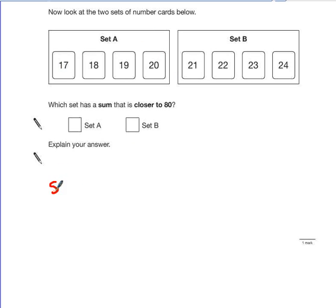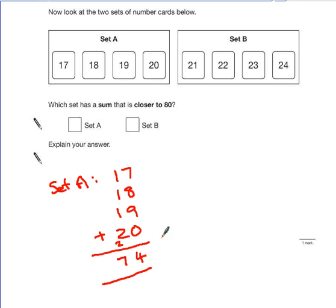So for set A, if we add all the numbers together, so we have 17, 18, 19 and 20. 7 add 8 is 15. 15 add 9 is 24. So that's 4, 2 carried across. 1, 2, 3, 4, 5, 6, 7. So we have 74 from set A.